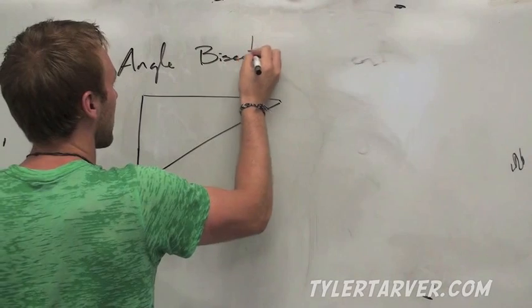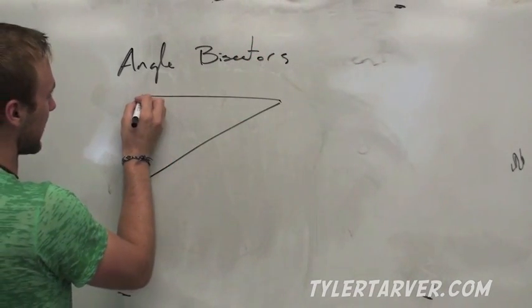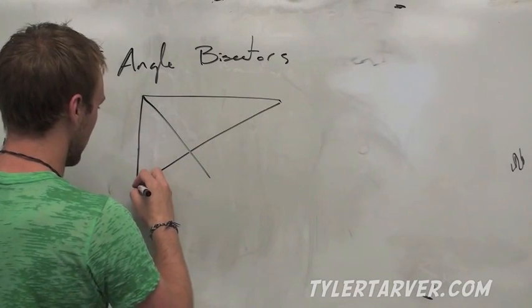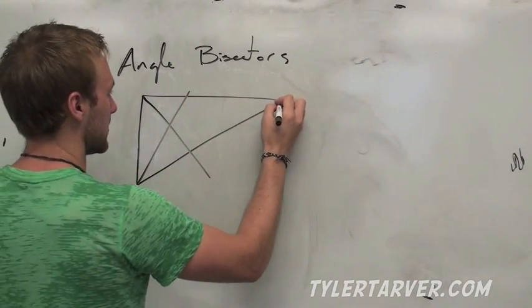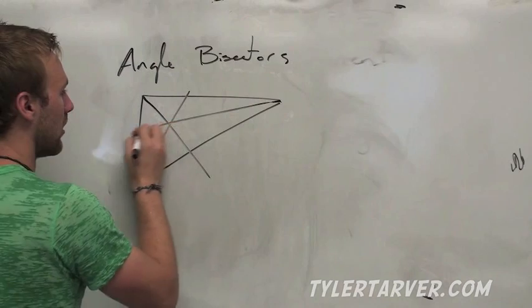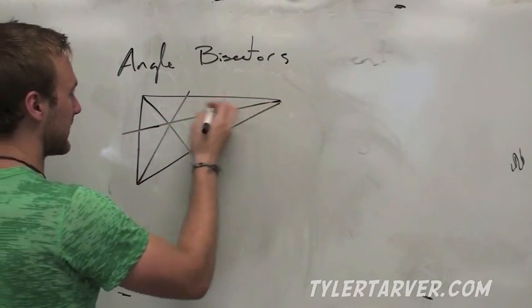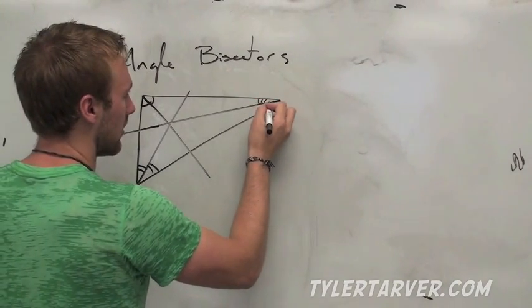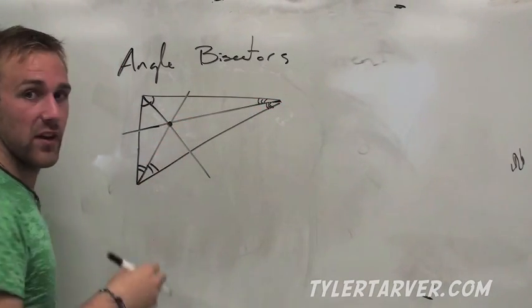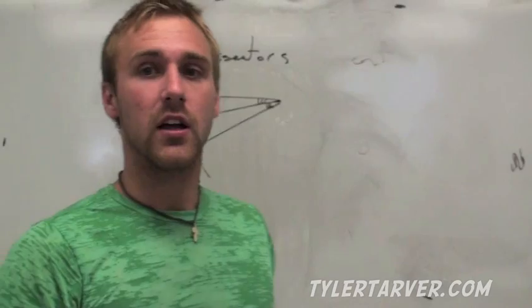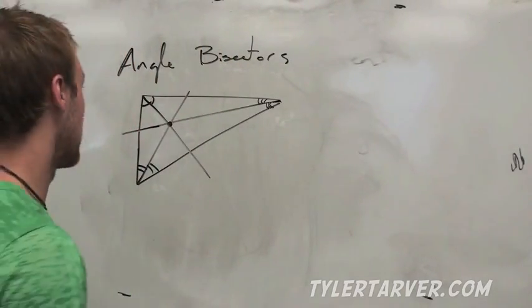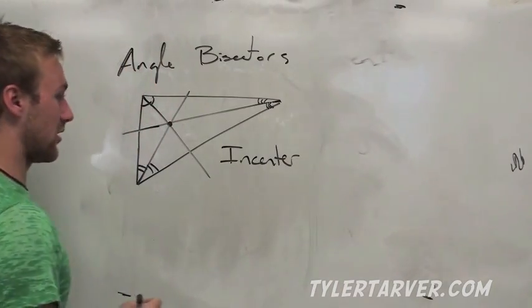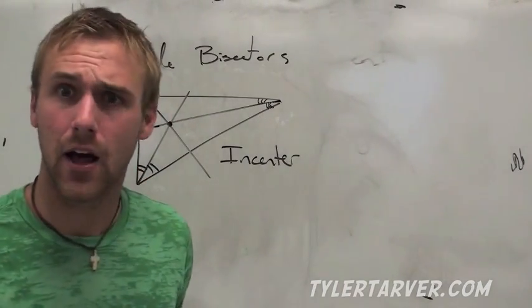First thing we did was where the perpendicular bisectors meet. Now, we're doing where the angle bisectors meet. Angle bisectors. Cut this angle in half. Those are all angle bisectors. Say I cut that in half, I cut that in half, and I cut that in half. Right there, where they all meet, their point of concurrency is called the incenter. It's called the incenter. And guess what? It's in the center.